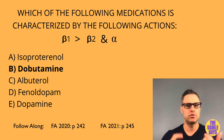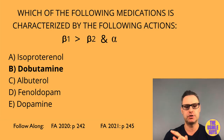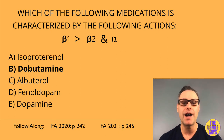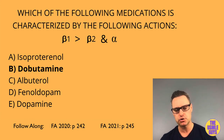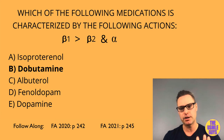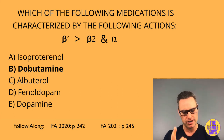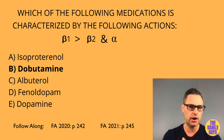Norepinephrine affects alpha-1 > alpha-2 > beta-1, and is used to manage hypotension and septic shock. Its administration increases blood pressure, heart rate, and cardiac output.